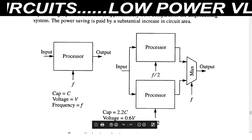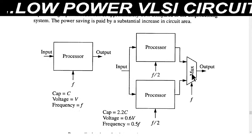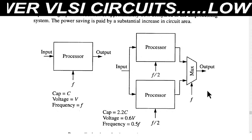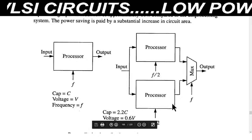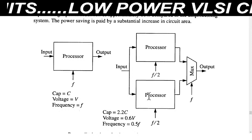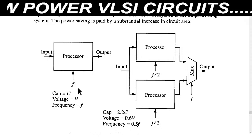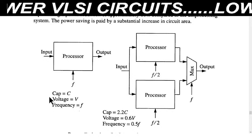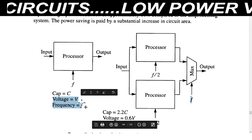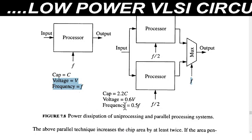In this overall processing we minimize the frequency, but because of the use of the multiplexer and, on the receiver side, the demultiplexer, the capacitance requirement will be high. If before using the parallel architecture the capacitance value is C, then after parallel processing this capacitance will move towards 2.2C — slightly greater than twice the previous capacitance. But the frequency is minimized, so if the voltage is V and frequency is f, after parallel processing the supply voltage V will be reduced to 0.6V.